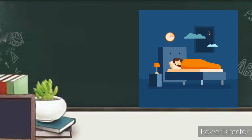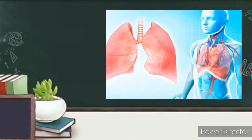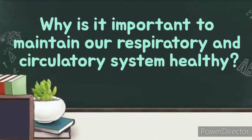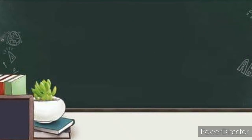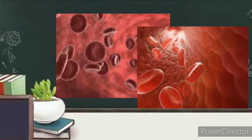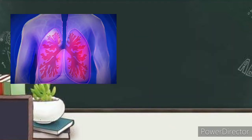Eating healthy foods, getting enough sleep, and being active every day can help keep our respiratory and circulatory systems strong. Getting enough exercise makes our lungs stronger and better at giving our body the oxygen it needs. So why is it important to maintain the health of the respiratory and circulatory systems? The body cells need a continuous supply of oxygen for the metabolic processes that are necessary to maintain life. The respiratory system works with the circulatory system to provide this oxygen and to remove the waste products of metabolism.